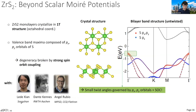This work is again with Lede, Dante, and Angel. The premise is to look at the 1T structure of a ZrS2 monolayer: it is a semiconductor with an ~eV band gap, and the valence band maximum is composed not of a dz² transition metal orbital but of the px and py orbitals of sulfur. Notably, in the absence of spin-orbit coupling, these two orbitals would be degenerate; however, strong spin-orbit coupling already in the monolayer breaks this degeneracy and introduces a finite spin-orbit gap at the Γ point.